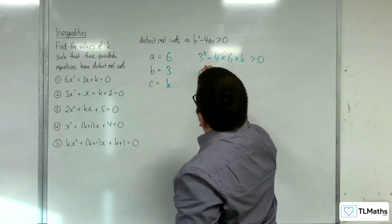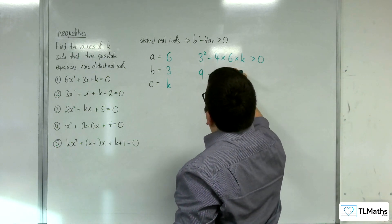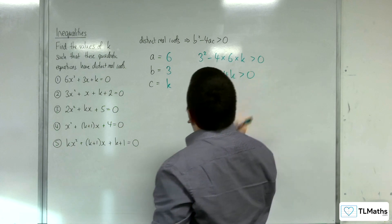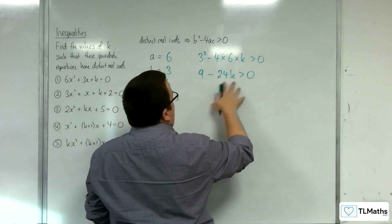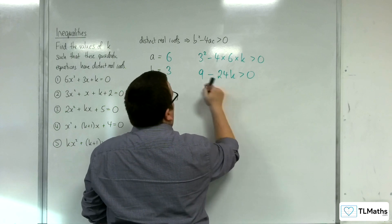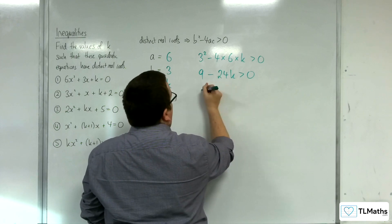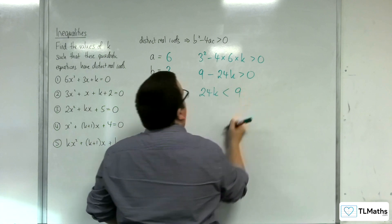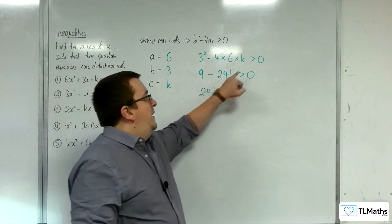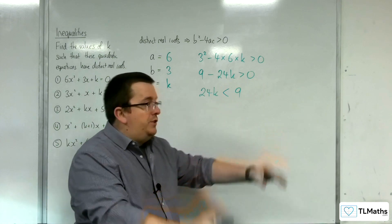We have 9, take away 24k must be greater than 0. If I add the 24k to the other side, we'll have 9 is greater than 24k, so 24k would be less than 9. I've moved it over there and then just reordered the inequality.